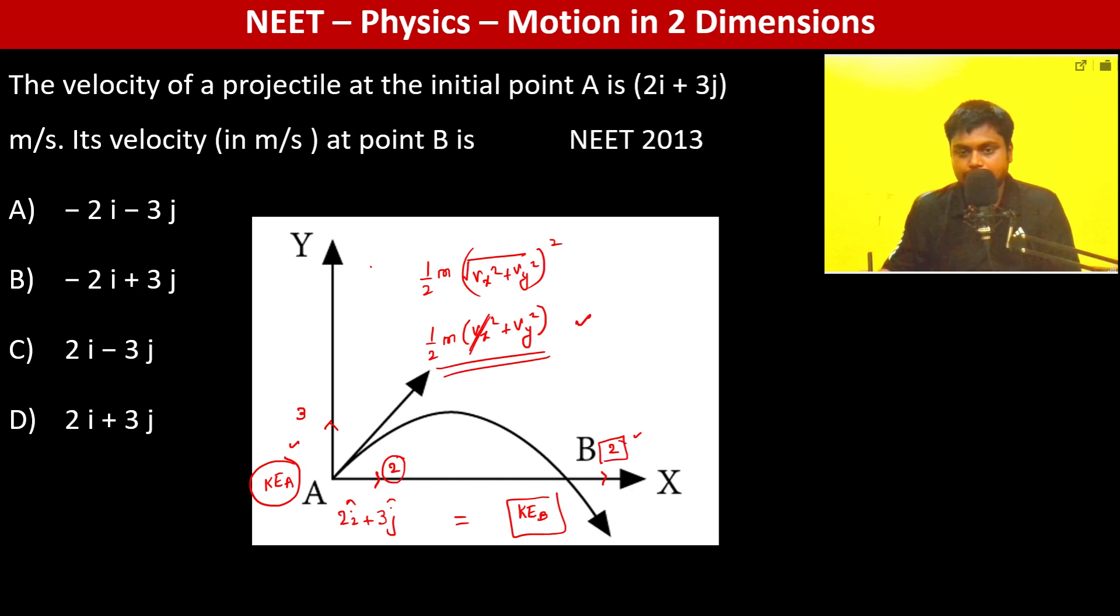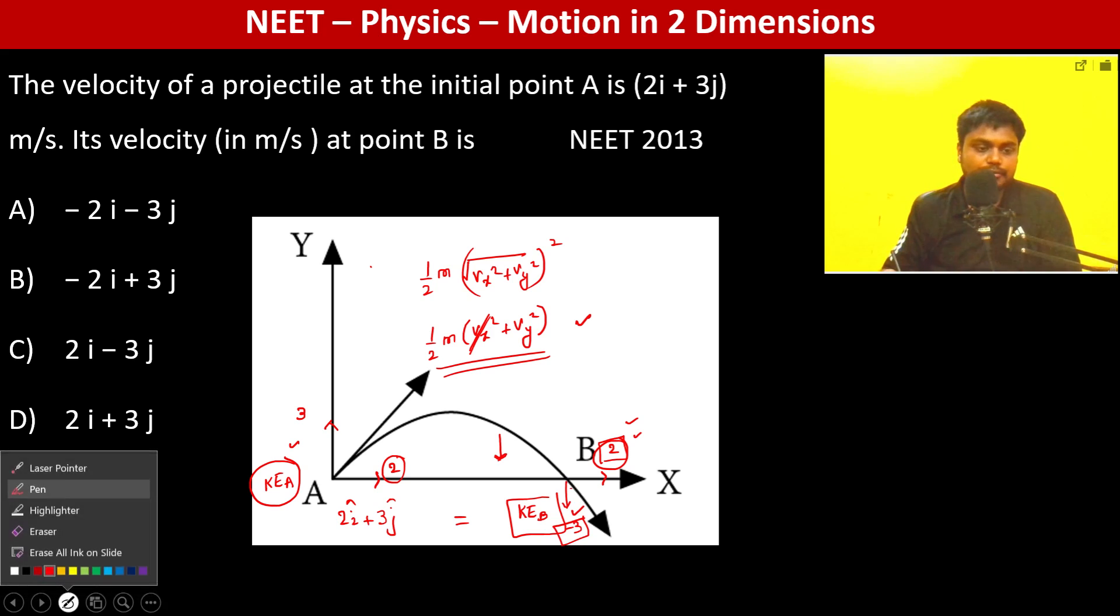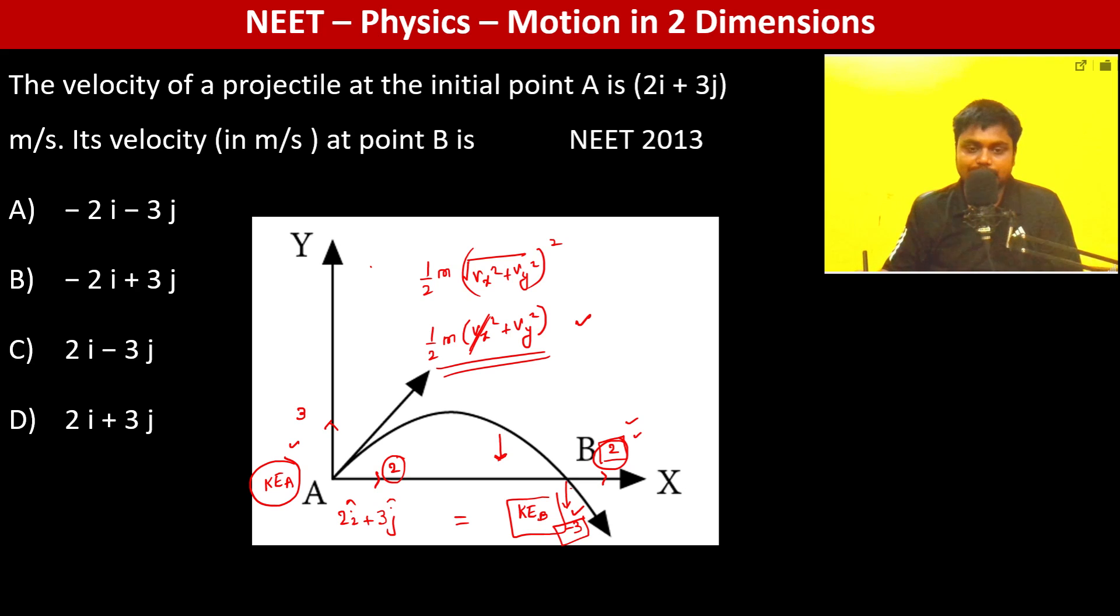for both of them, Vy² should be the same. But of course as it is going down, the velocity should be negative in the y direction. So therefore there is no other option than for it to be minus 3. So the answer will be 2i - 3j, which is the velocity.